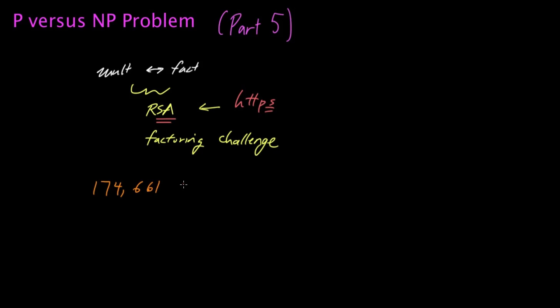Again, this is the kind of number which might be hard for you to factor manually, but with a computer it's actually pretty trivial. And if you were to write a computer program that did something as simple as trial division, in a very short amount of time, probably in a fraction of a second, it would spit out the factors 389 and 449.